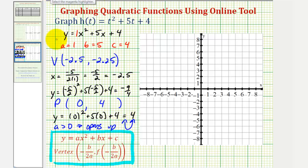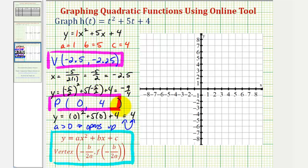Now to graph the parabola, we'll first plot the vertex and then use the y-intercept as our second point. The vertex would be negative 2.5, negative 2.25, which would be somewhere in here. And then the second point is the y-intercept of 0, 4, which would be here.